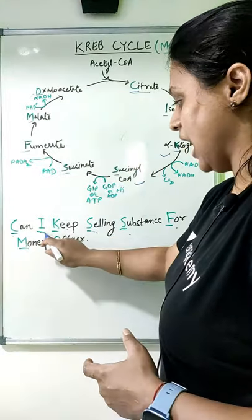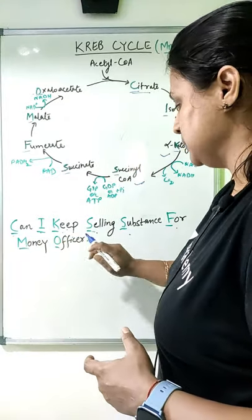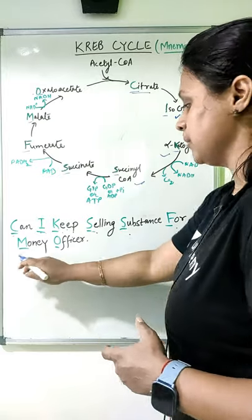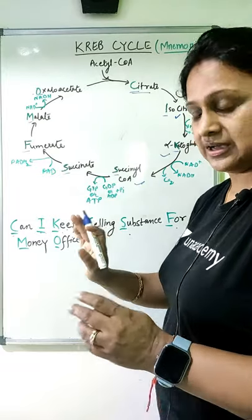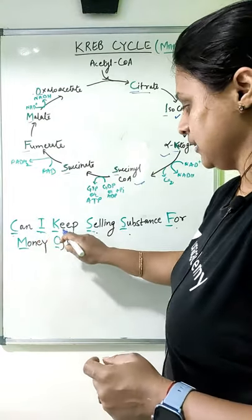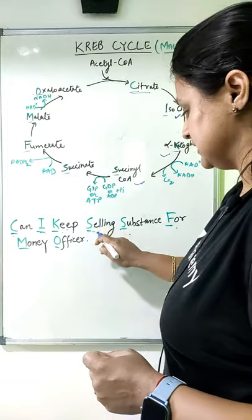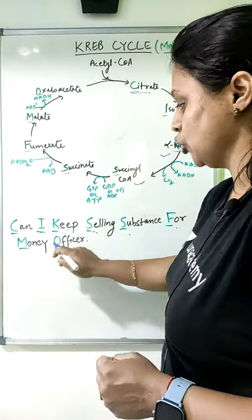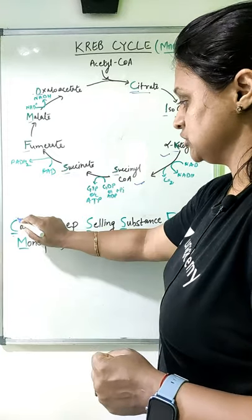So what is the shortcut to keep it? The mnemonic is: 'Can I Keep Selling Substance For Money Officer?' — Can I Keep Selling Substance For Money Officer.